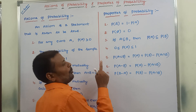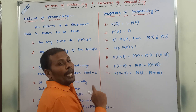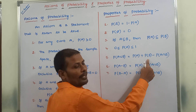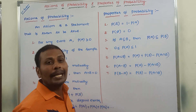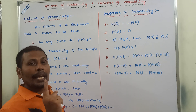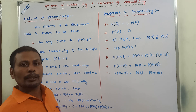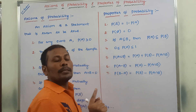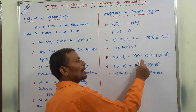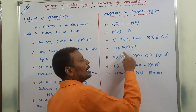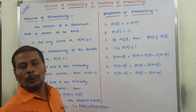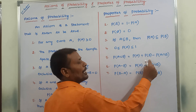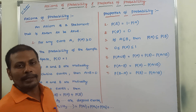Next, fifth point: probability of A union B is equal to probability of A plus probability of B minus probability of A intersection B. If A and B are two mutually exclusive events, the intersection term becomes 0, so only P of A union B is equal to P of A plus P of B. If A and B are not mutually exclusive events, then P of A union B is equal to P of A plus P of B minus P of A intersection B.